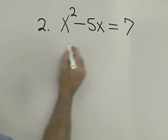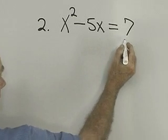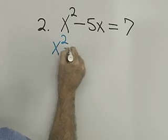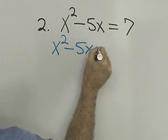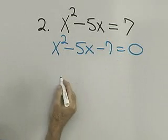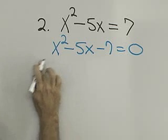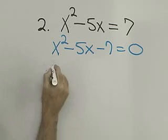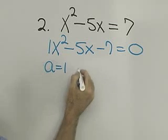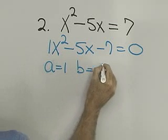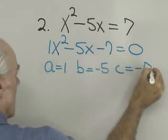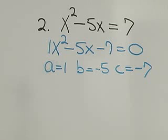I have x squared minus 5x is equal to 7. The first thing I want to do is put this in standard form. I'll do that by adding negative 7 to each side. I end up with x squared minus 5x minus 7 equals 0. So I have to identify a, b, and c. a is equal to 1 — that's the coefficient of x squared. b is equal to negative 5, and c is equal to negative 7.